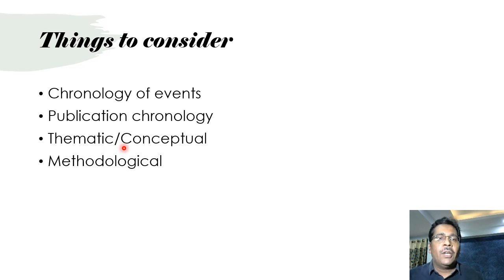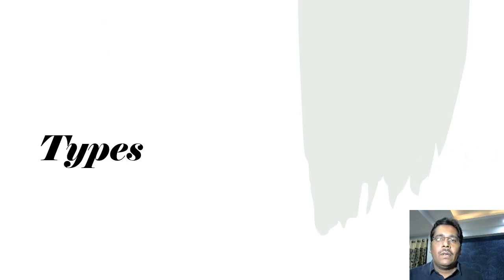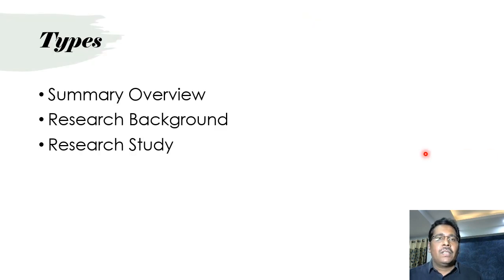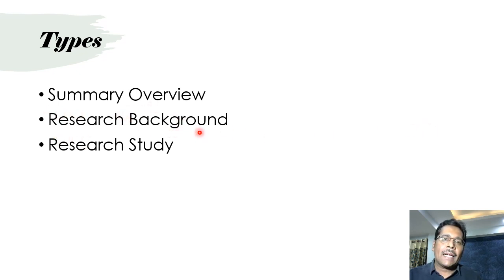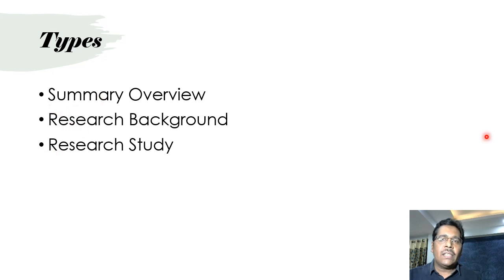Before getting into the nuts and bolts of how reviews are carried out, it's important to talk about various types of literature review. At a basic level, we can categorize them into three main types: the summary overview, the research background review, and the research study or systematic review.